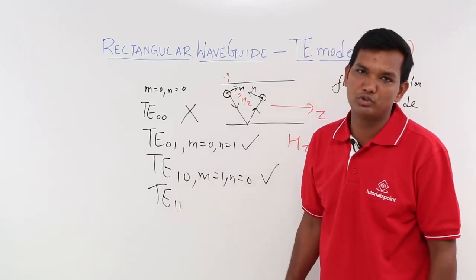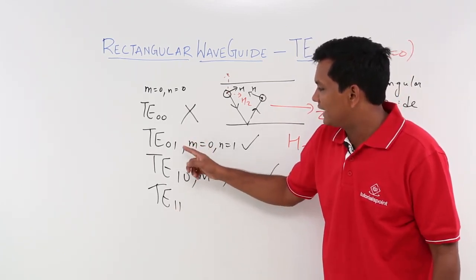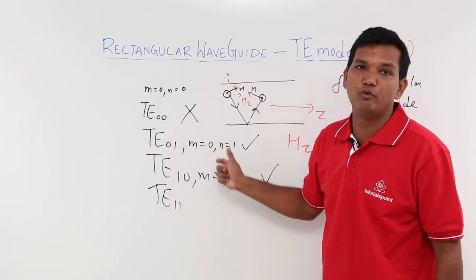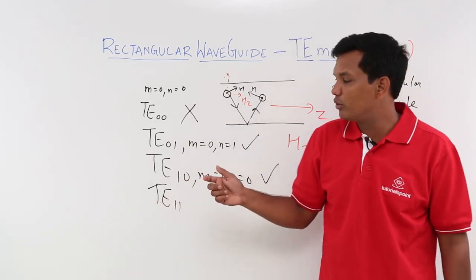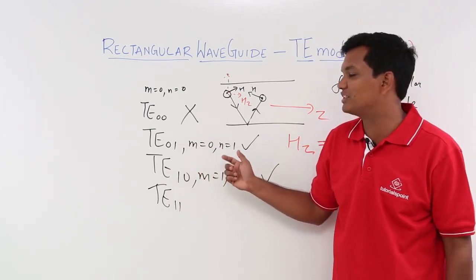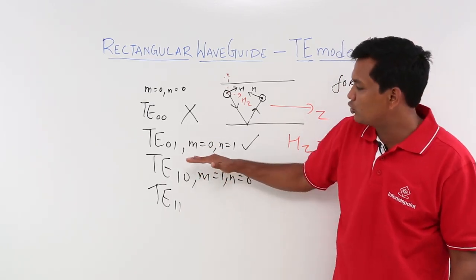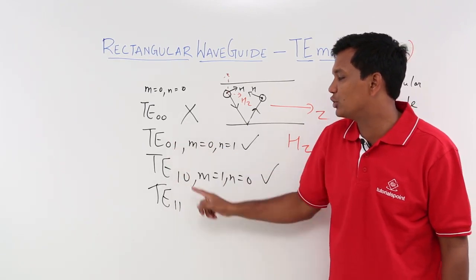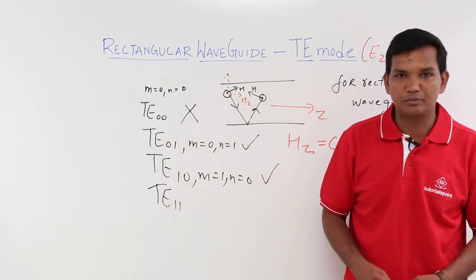So we know that TE(0,0) will not exist, but TE(0,1), TE(1,0), and TE(1,1) will all exist. Now, which is the lowest mode? We need to find out which is the lowest mode between TE(0,1) and TE(1,0). The lowest mode is the one with the minimum possible frequency that can travel. We will see how to conclude which is the lowest mode in the next videos.